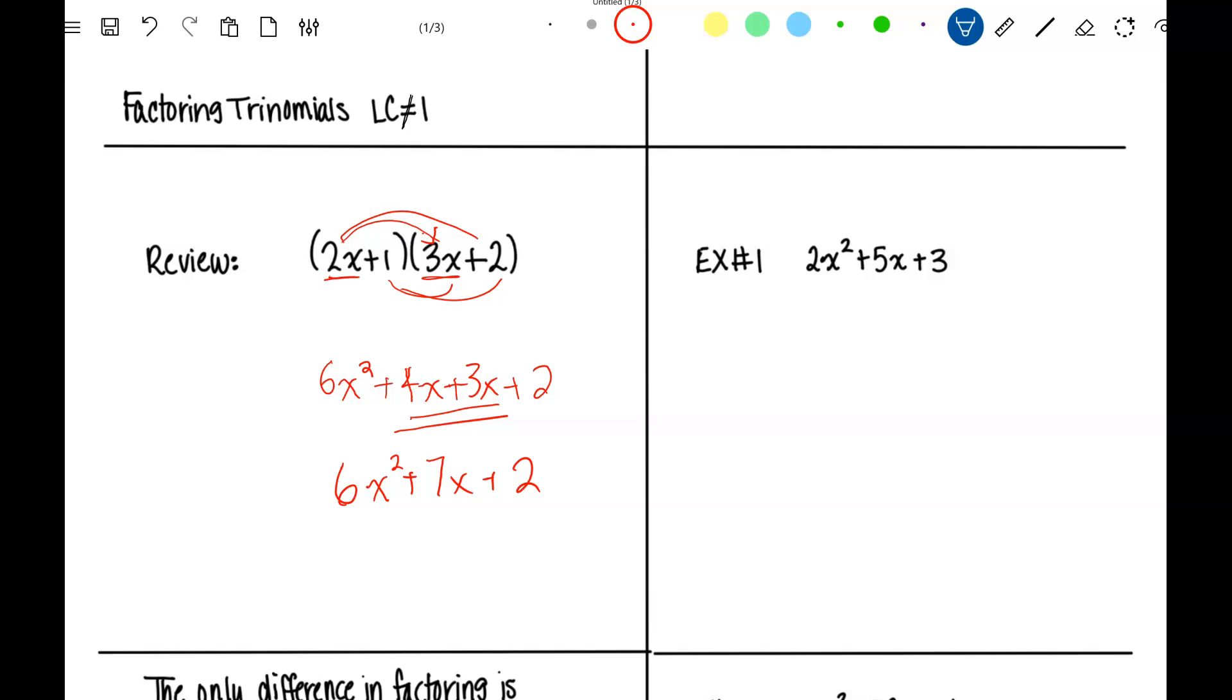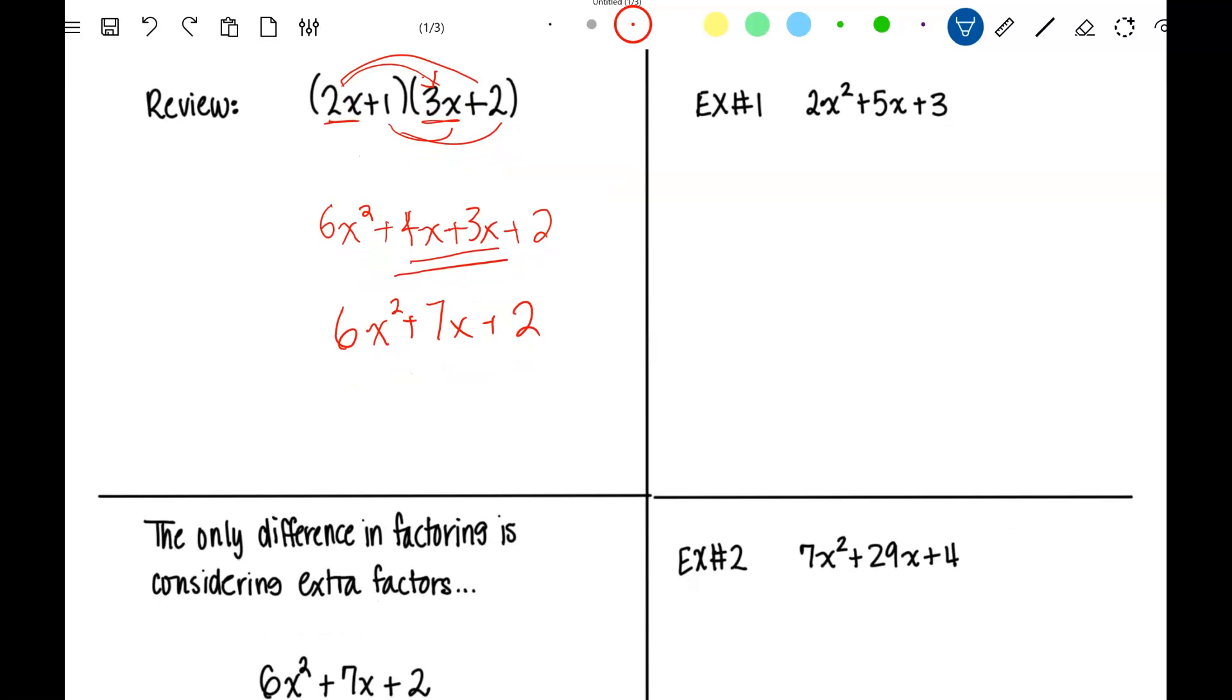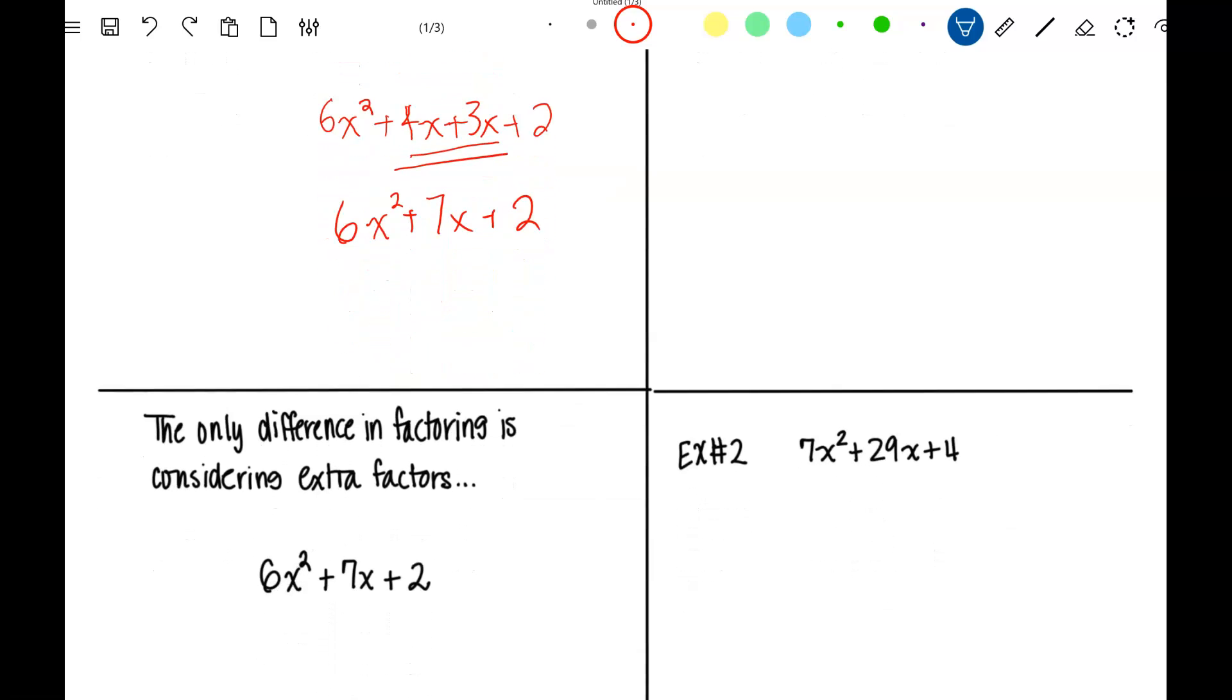So the difference is the ones we did before just had x's here and our answer just had an x squared. So the only difference in what we're doing this time and what we did before is we have to consider extra factors.